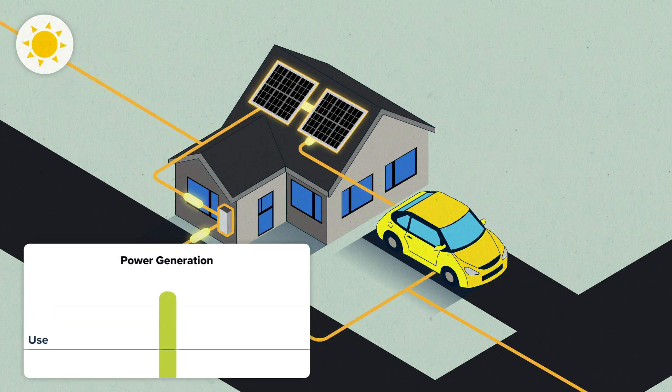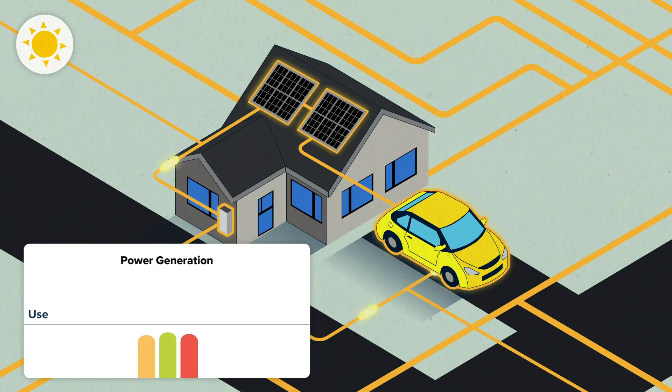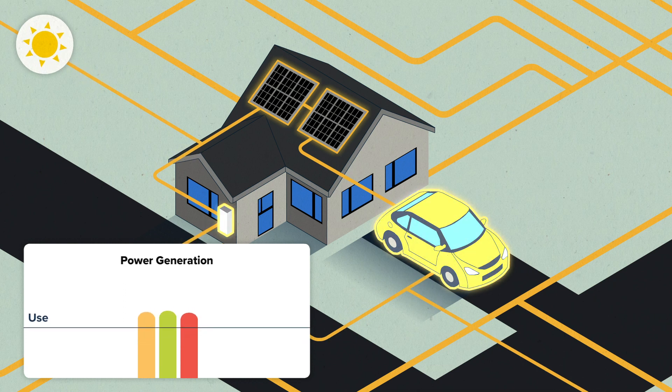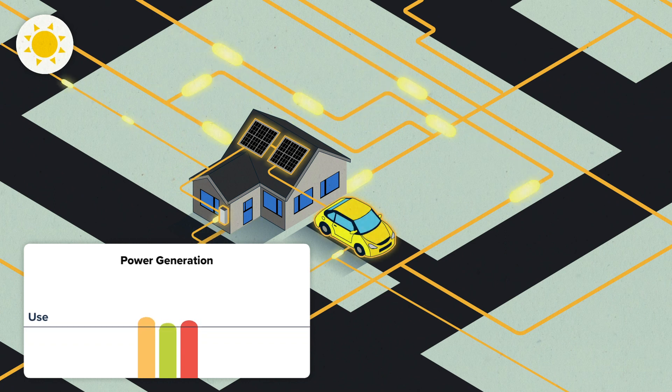Sometimes our generation is high when we don't need as much, and sometimes it's low when we do. To help, it's now possible to manage the energy by putting your excess energy back into the grid or into batteries ready for you to use later.